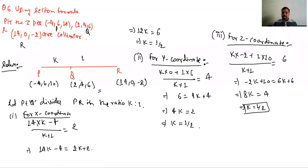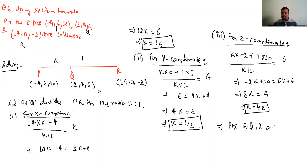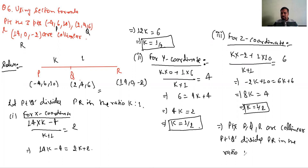Teeno jagah K ki value same hai — X, Y aur Z coordinate mein teeno jagah K = 1/2. Same hone ki wajah se, points P, Q, R are collinear. And point Q divides PR in the ratio 1:2.